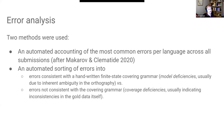Two methods were used for error analysis. The first is an automated accounting of the most common errors per language across all submissions — a method developed by Makarov and Clementine. We also automatically sorted errors into those consistent with a handwritten finite-state covering grammar, which we call model deficiencies, usually due to inherent ambiguity in the orthography, and errors not consistent with the covering grammar, called coverage deficiencies, which usually indicate inconsistencies in the gold data itself — target errors, to use the term from earlier work.